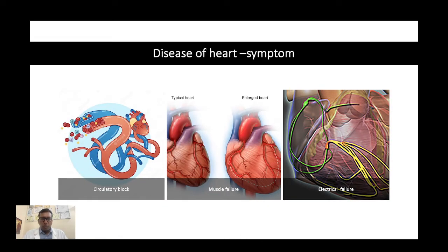First, what is heart disease and what are the important symptoms? There are three parts: one is circulatory issues, second is the muscle or pumping issues, and third is the electrical symptoms. Since today we are discussing circulatory issues, these can be due to a block in the coronary circulation — the vessels which supply the heart.